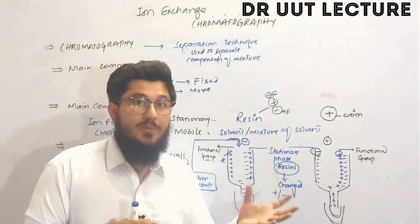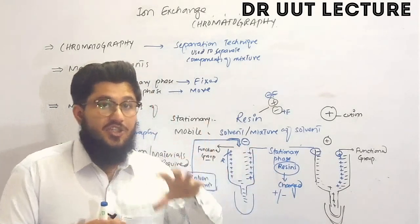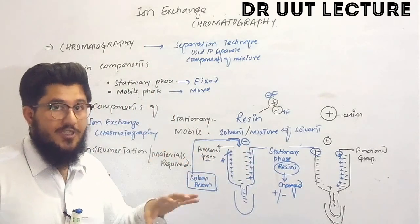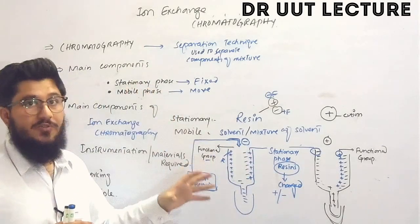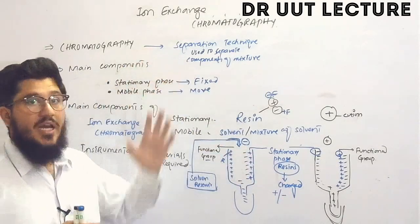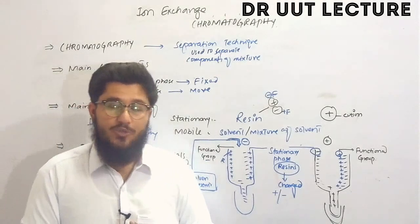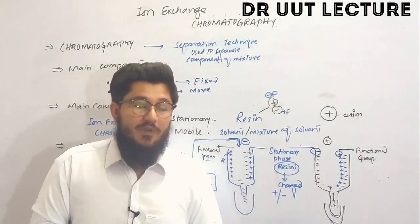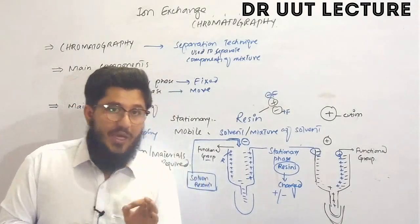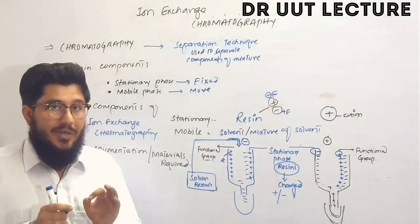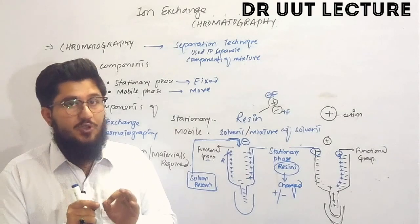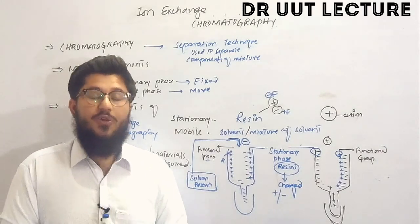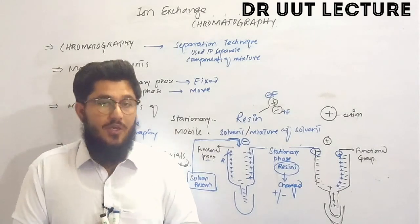In summary, the principle of ion exchange chromatography is based on ion exchange — the sample ions exchange with the functional groups of the resin stationary phase, which is why this chromatography is known as ion exchange chromatography. If you have any questions, please feel free to ask in the comment box. Thank you for watching.